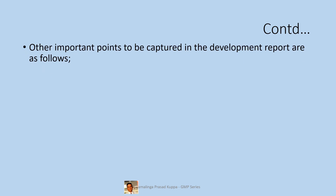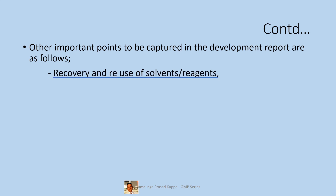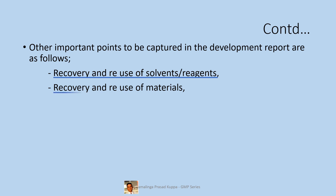Other important points to be captured in the development report: recovery and reuse of solvents and reagents. Solvents that are used as vehicles for the process to move forward will be recovered. Usage of recovered solvents in the process should be monitored. It is recommended to use recovered solvents in the same step from which they were recovered. If required to be used in any other step, a detailed validated recovery procedure is required. Certain reagents like palladium or nickel are recovered from the process for reuse. Details of recoveries should be part of the report.